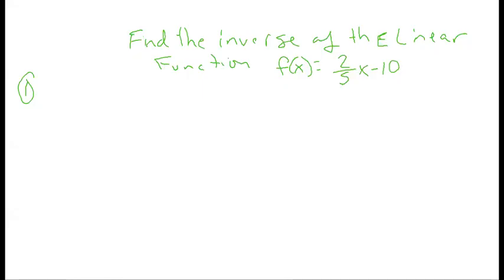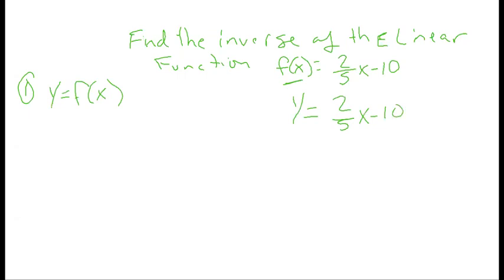We're going to find the inverse of the linear function f of x equals two-fifths x minus 10. The first thing I'm going to do is make life easier and cut down on this statement. We know that y equals f of x, so I'm going to replace f of x with y. So it's going to say y equals two-fifths x minus 10.